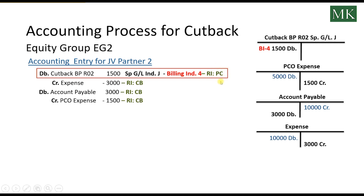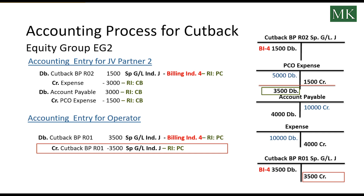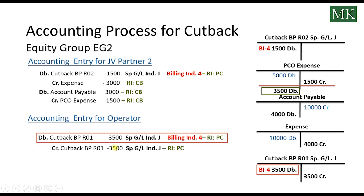The other entry is for the operator share, where the same special GL account is debited or credited, posting and clearing the operator business partner R01 in the same accounting entry. For the debit line item, billing indicator 4 is assigned, and both are posted with recovery indicator PC. The trial balance view shows 3,500 debit on business partner R01 (the operator) with special GL indicator J.